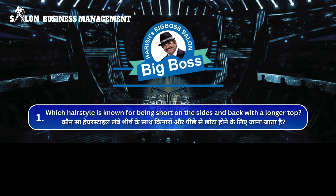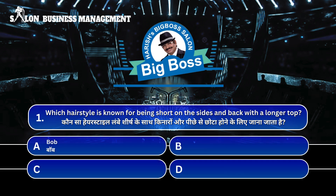Question 1. Which hairstyle is known for being short on the sides and back with a longer top? A. Bob, B. Undercut, C. Pixie, D. Blunt Cut.